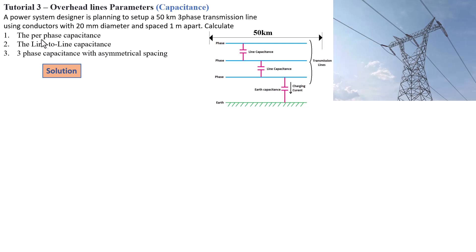The problem statement is that a power system designer is planning to set up a 50-kilometer three-phase transmission line using conductors with 20-millimeter diameter, spaced one meter apart. The three questions we need to address are: calculating the per-phase capacitance, the line-to-line capacitance, and the three-phase capacitance with symmetrical spacing of one meter between the lines.